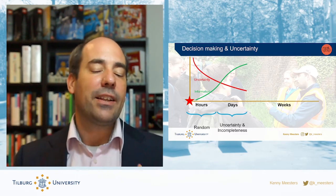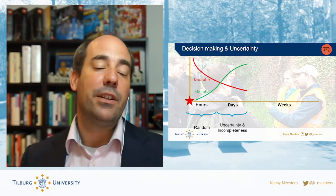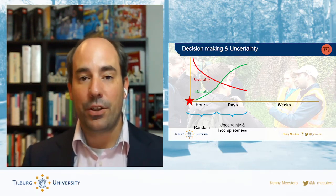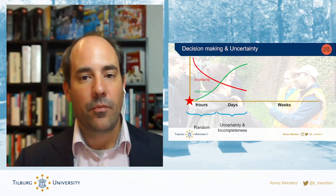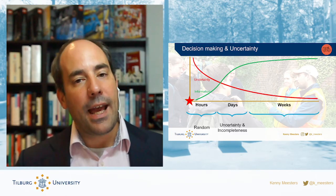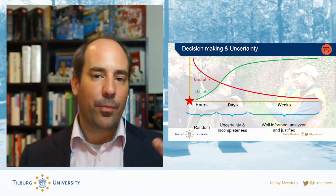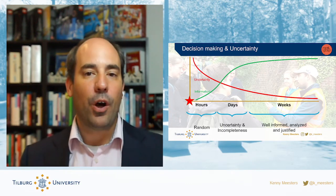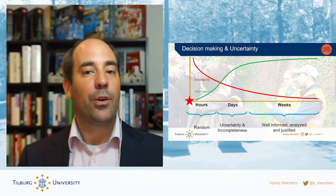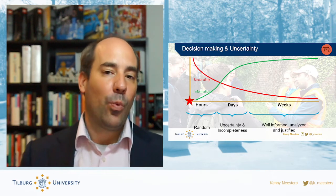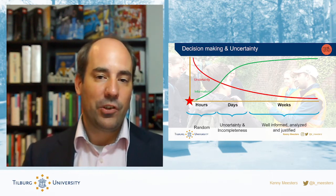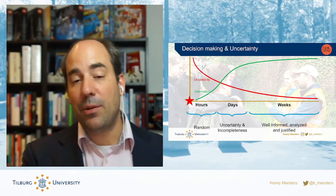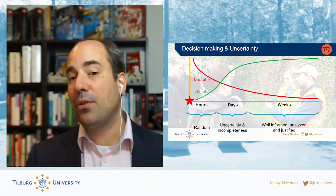At this stage, we at least know what information is missing and what actions we should take to get it. As time moves on further, the flow of information stabilizes, we get a constant stream of updates, the uncertainty goes down, and we can make well-informed decisions.